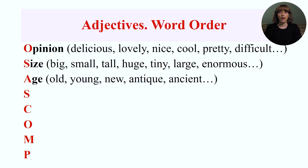Age adjectives tell us how old someone or something is. Some examples of adjectives referring to age are: old, young, new, antique, ancient.